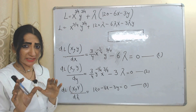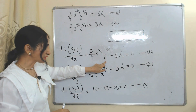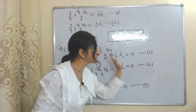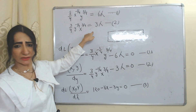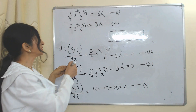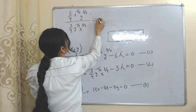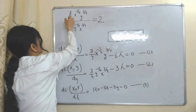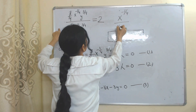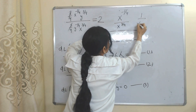Here we have done partial derivation with respect to x, y, and lambda, giving us three equations. This is our first equation and this is our second equation. If we bring 6 lambda and 3 lambda to the right side, the first equation becomes rearranged and the second equation becomes rearranged as well. Now we divide the first equation by the second equation. When we divide, this part becomes equal to 2. We divide x to the power minus 1/4 by x to the power 3/4 — the power comes below.